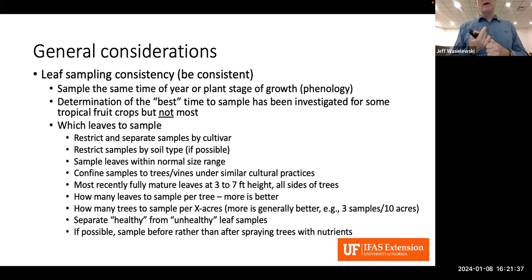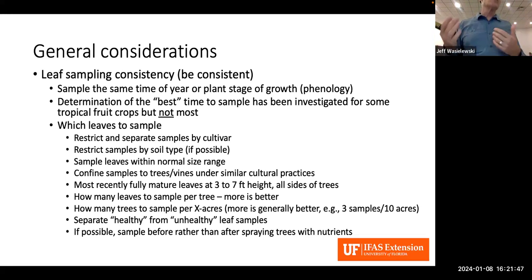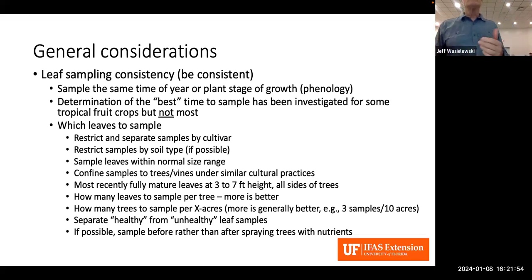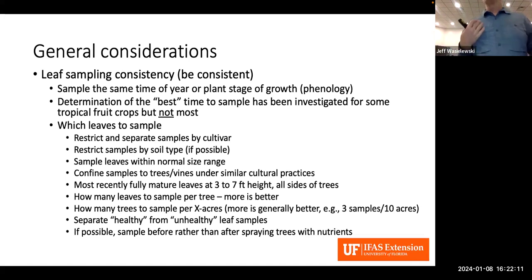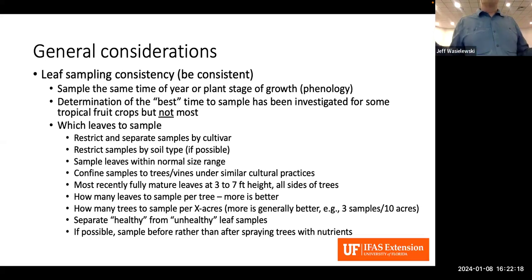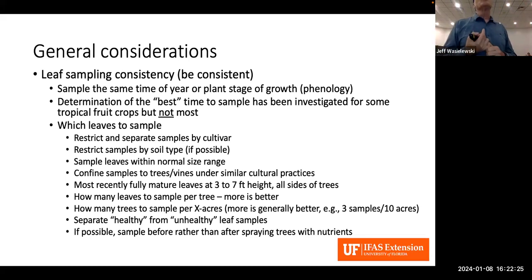You also want to restrict the sample by soil type. If your grove has two or three different soil types, separate those samples. Sample leaves that are within the normal size range — don't pick the really small or really large leaves. Confine samples to trees or vines under similar cultural practices, so if one part of your grove receives extra potassium versus another that almost never gets it, separate those samples.